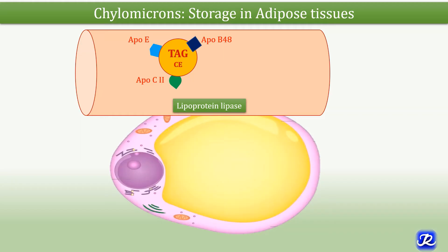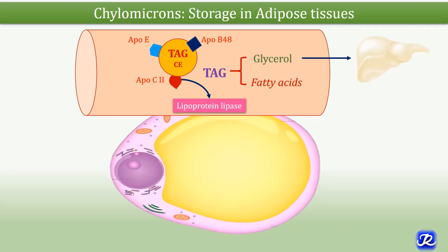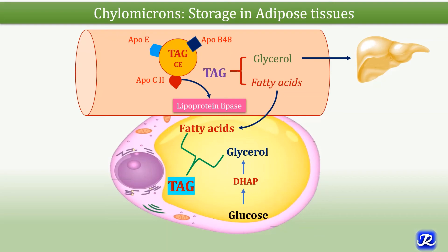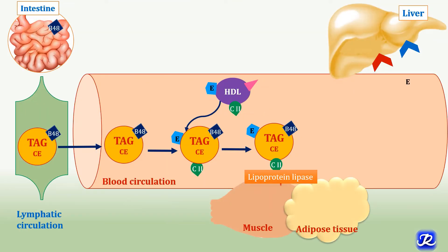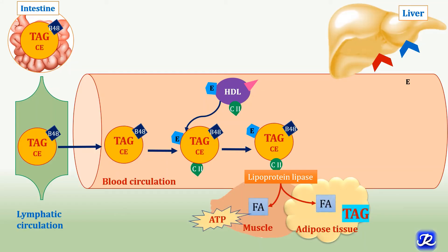In adipose tissue, lipoprotein lipase is also expressed, activated by ApoC2 and insulin. This lipoprotein lipase breaks down triacylglycerol into fatty acids and glycerol. Glycerol is transported back to the liver, and fatty acids are taken up by adipocytes and stored in the form of triacylglycerol in adipose tissue. In this way, the exogenous lipoprotein pathway efficiently transfers dietary fatty acids from the intestine to muscle for energy and to adipose tissue for storage.